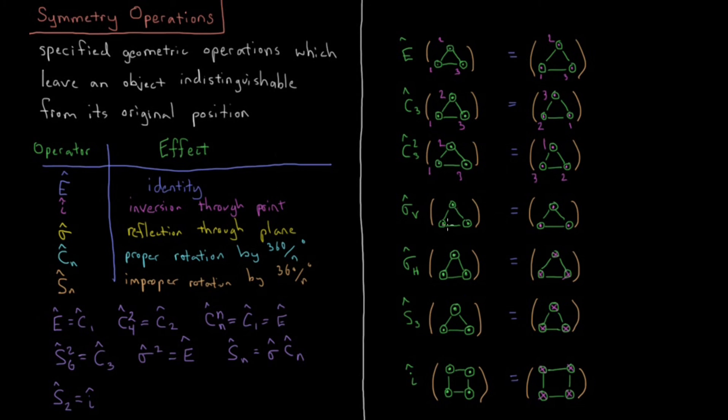Sigma V, if that's one that is parallel to our C3 axis here, V for vertical, which is parallel to our axis here. So if I start off with one, two, three, let's imagine the sigma V goes through here, mirror plane right there. Then we end up with three and one change places and two stays the same because it was on the mirror plane.